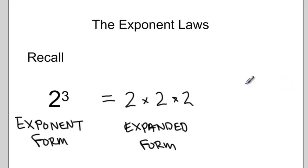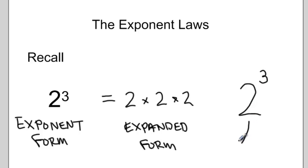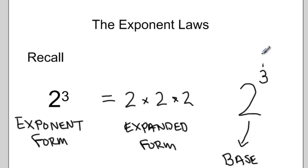Remember that when we have something like 2 to the exponent 3, the whole thing is a power. The number 2 represents the base. The number 3 represents the exponent.